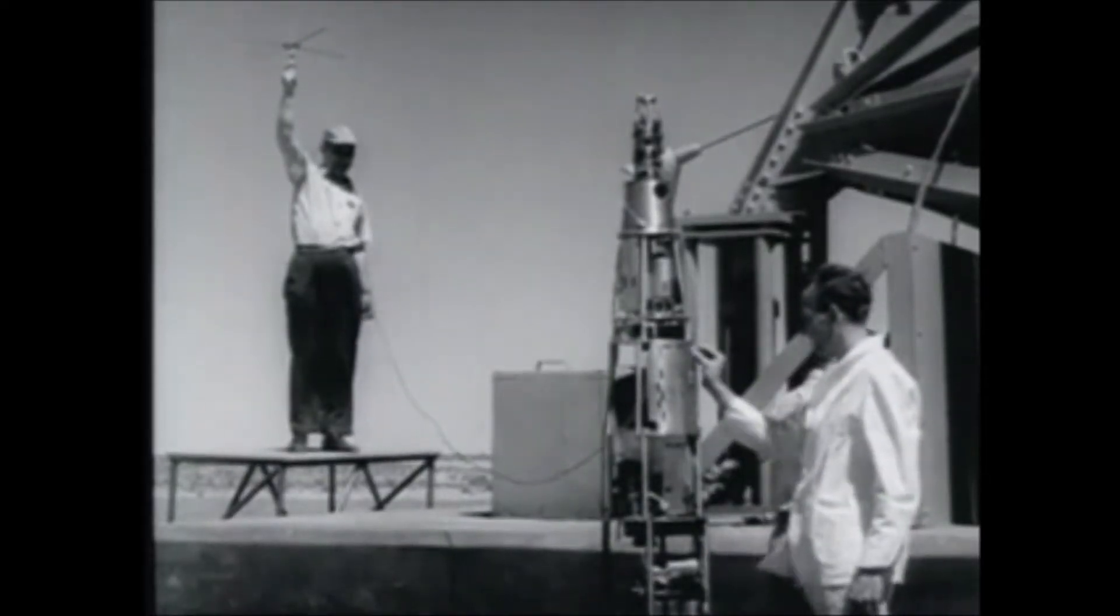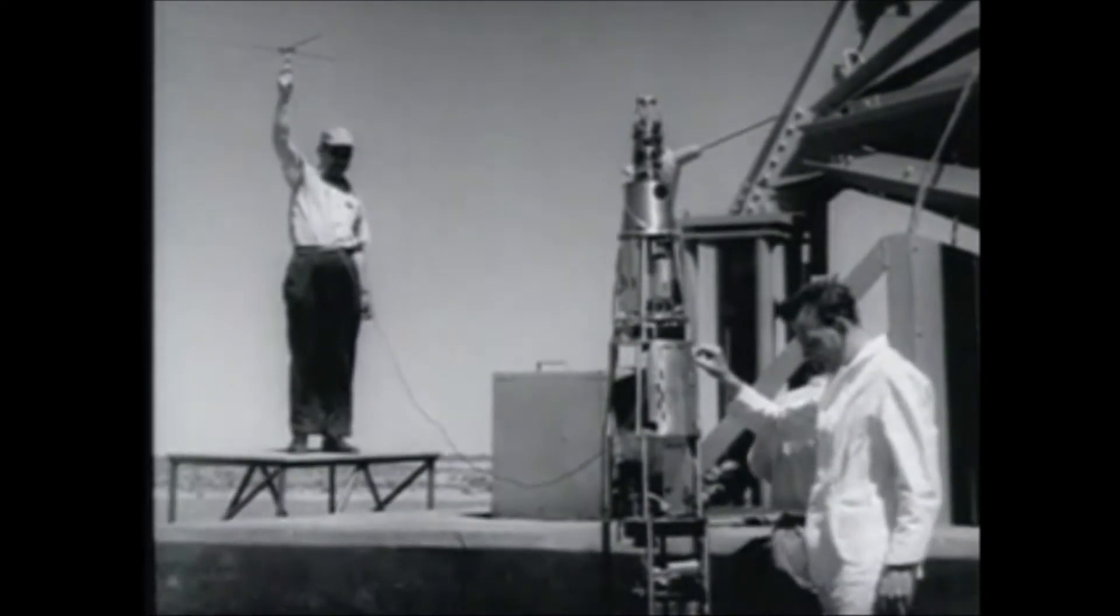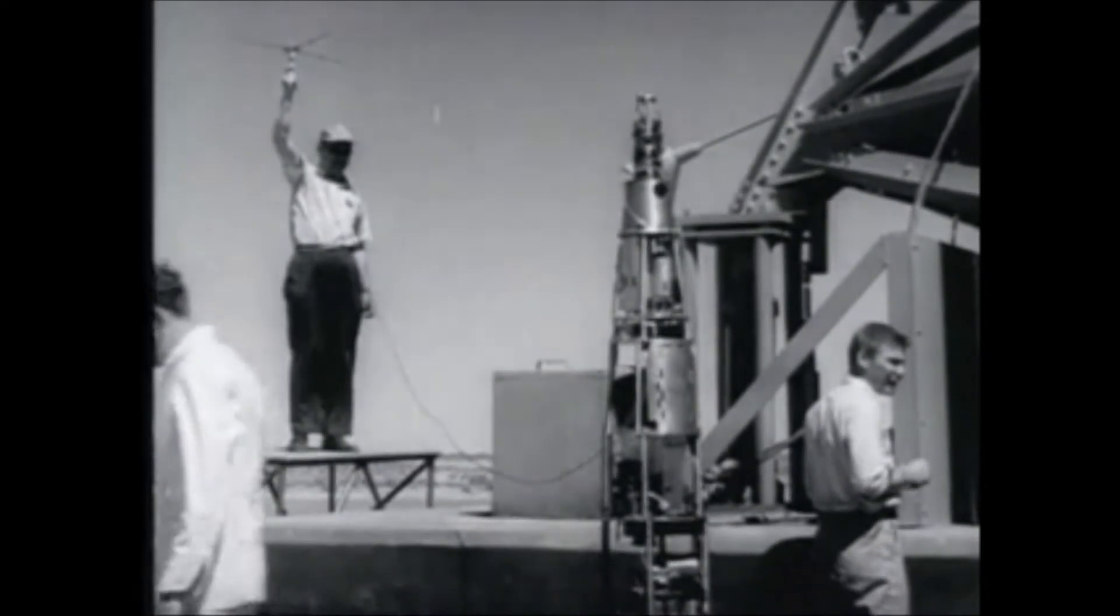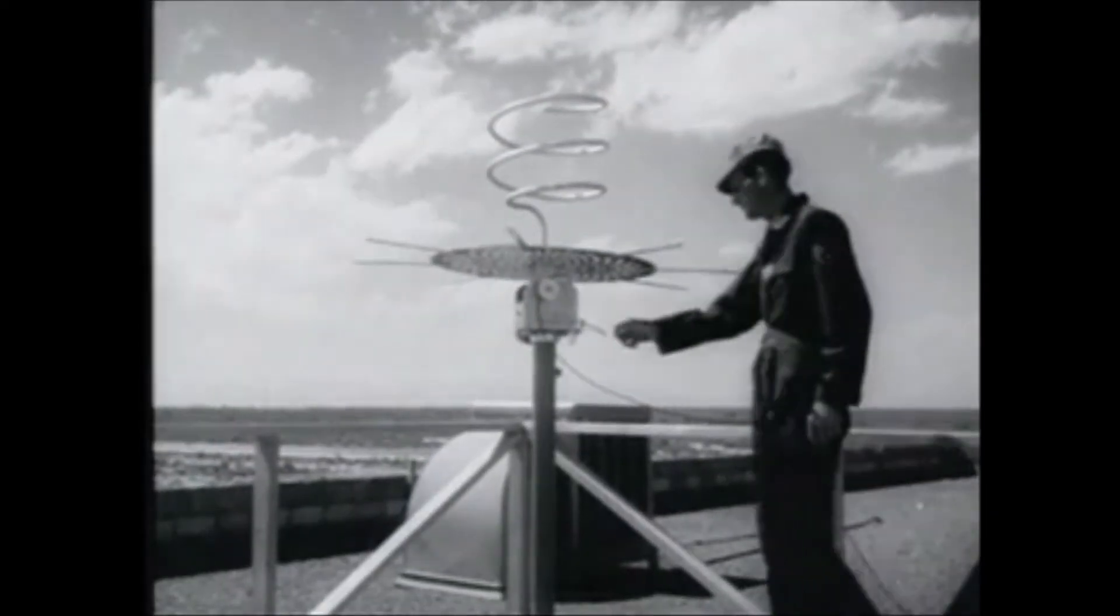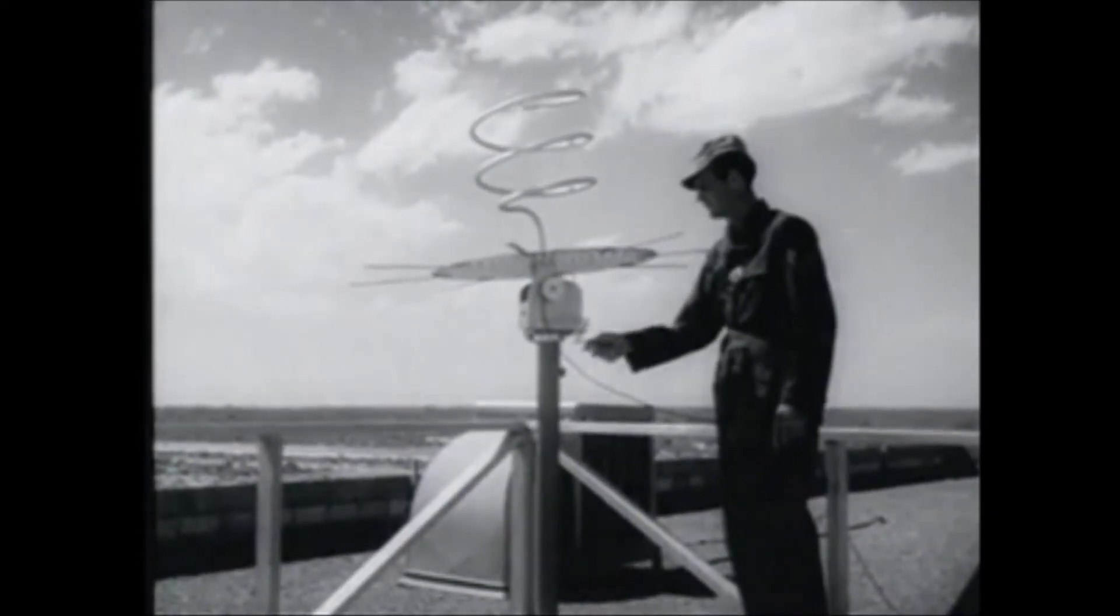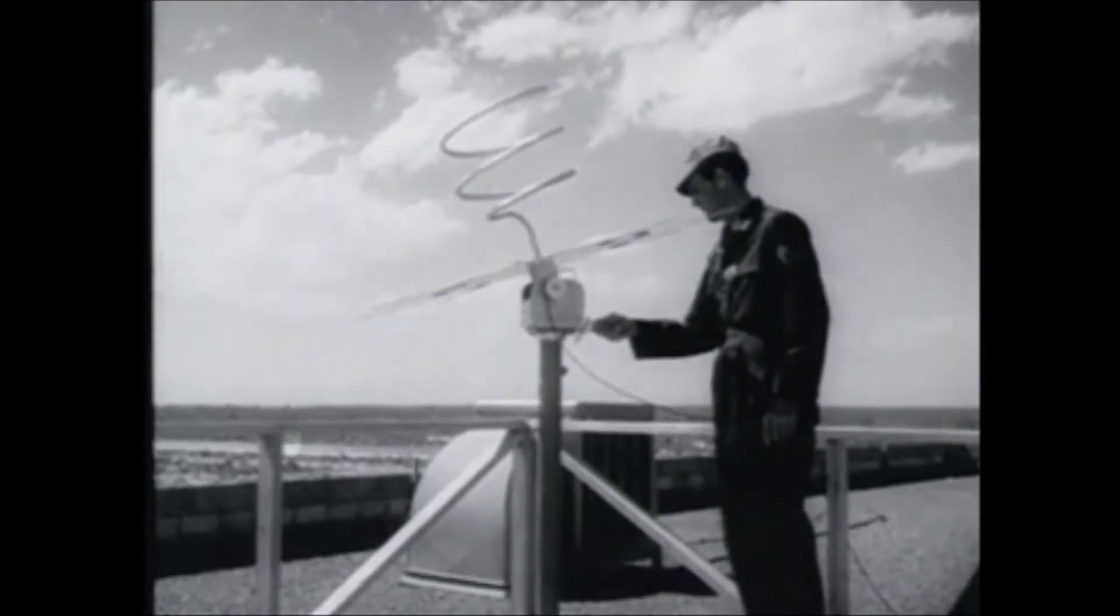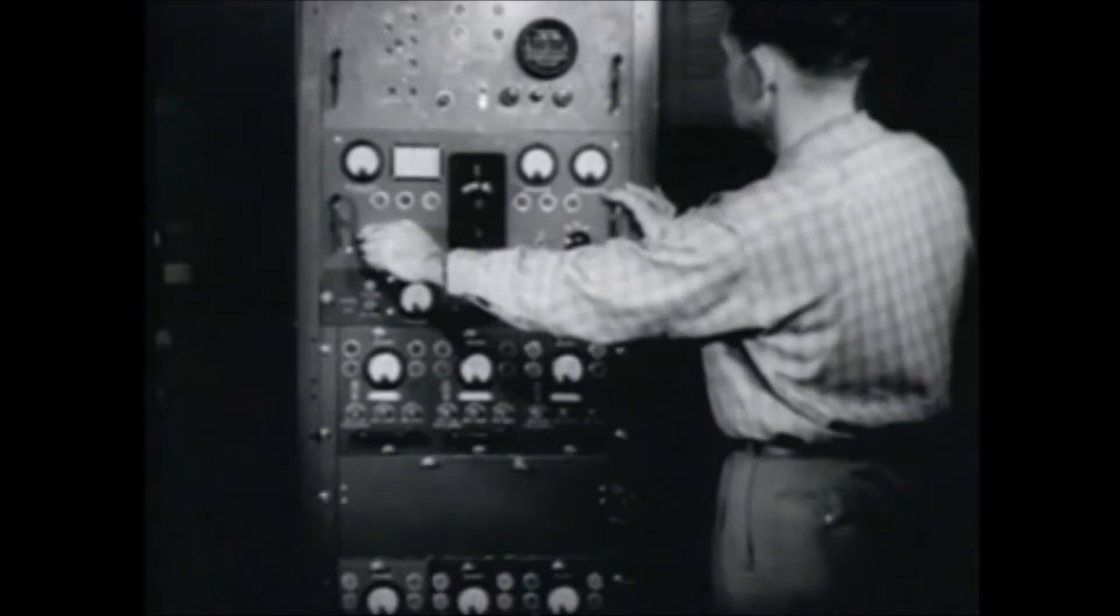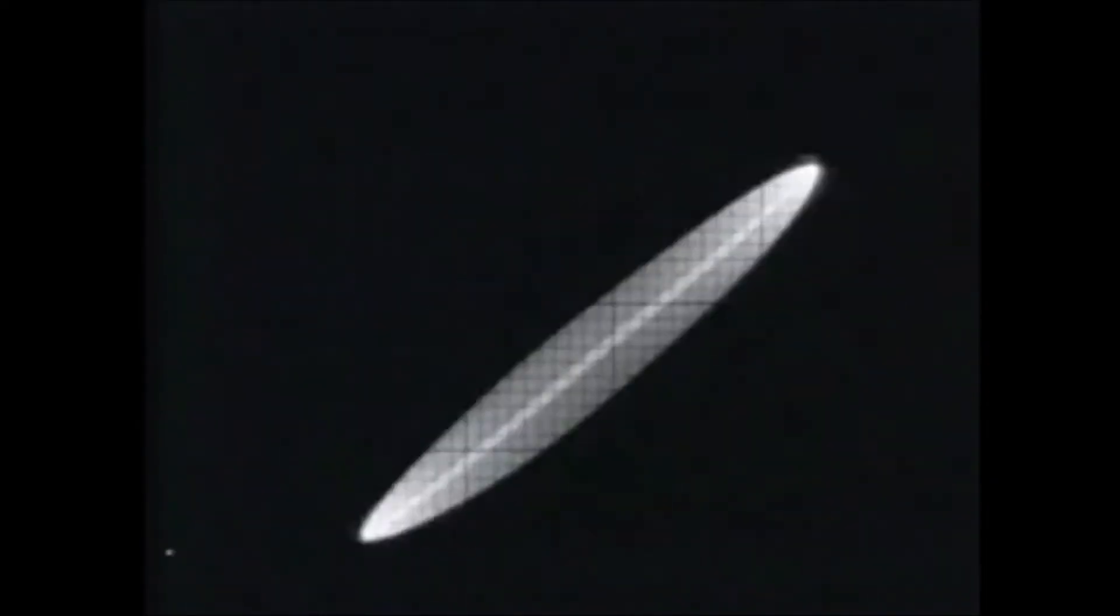At the launching tower, a check is made to assure proper operation of the telemetering transmitters. Frequency modulation signals from the rocket are picked up by this antenna on the blockhouse, then tuned by a technician inside with the aid of oscilloscope patterns on the telemetering receiver, and ultimately appear as lines on a graphic recorder which show changes in arterial and venous pressures in one of the monkeys.